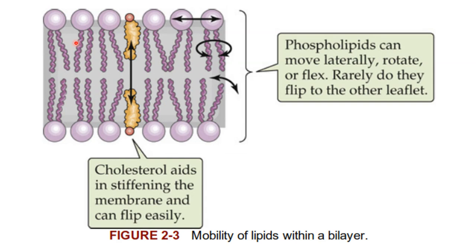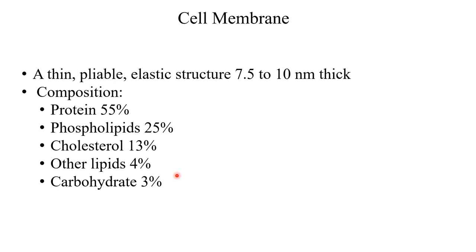In more detail, in between the phospholipids there are cholesterol layers. Cholesterol adds stiffness to the membrane and can flip easily. This flipping helps with the mobility of lipids within the bilayer, and it helps with diffusion of lipid-soluble substances. Lipid-soluble substances can easily pass through the membrane. Phospholipids can move laterally, rotate, or flex, but rarely flip to the other layer.